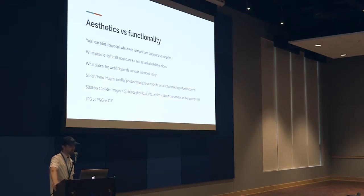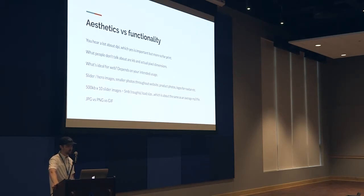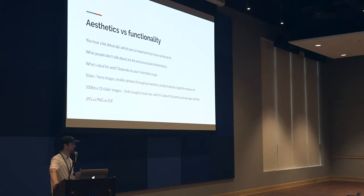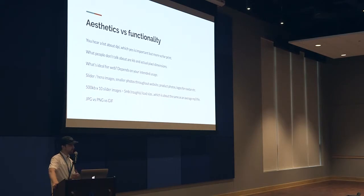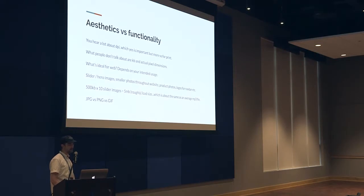We're going to go over the difference between aesthetics and functionality. DPI is kind of the only thing you hear about when people talk about images. You never really hear about kilobytes. You never really hear about pixel dimensions, and those are very pertinent details when it comes to web development and design. DPI is like the heavy hitter in the image realm. You'll probably see people say 300 DPI for print, 72 DPI for web - those rules more or less apply, but they are less important than the overall file size and the dimensions of your image.